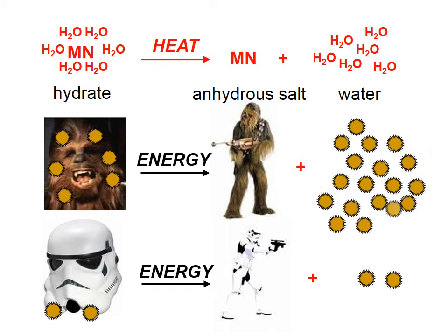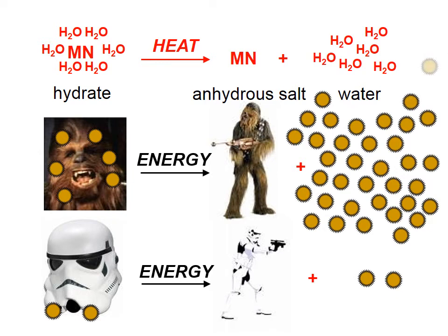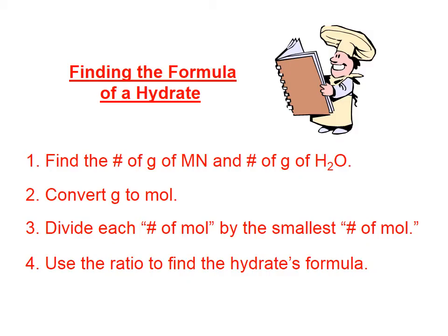This is the kind of thing we can do with hydrates in the lab. We can heat them, separate the water molecules from the anhydrous salt, and then by weighing things, we can calculate how many water molecules must have been attached. Paolo the Chef is going to help us find the formula of a hydrate. His recipe: one, find the grams of salt and grams of water; two, convert each to moles; three, divide each by the smallest; and four, use that ratio to find the hydrate's formula. This is exactly the same recipe used to find empirical formulas.